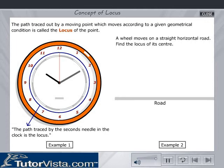Now let's move on to another example. A wheel moves on a straight horizontal road. Find the locus of its centre.